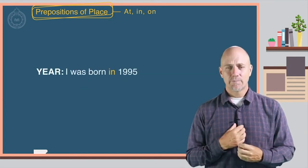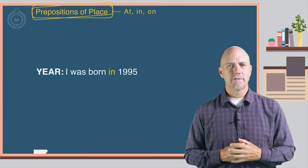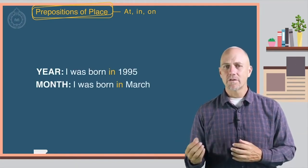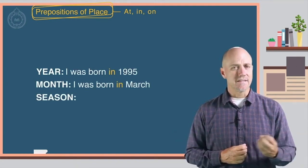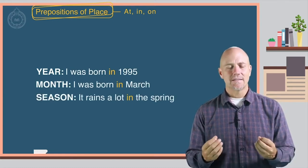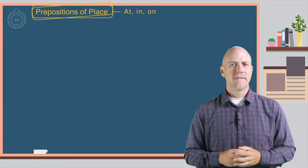Year: I was born in 1995. Month: I was born in March. Season: It rains a lot in the spring. Number two.